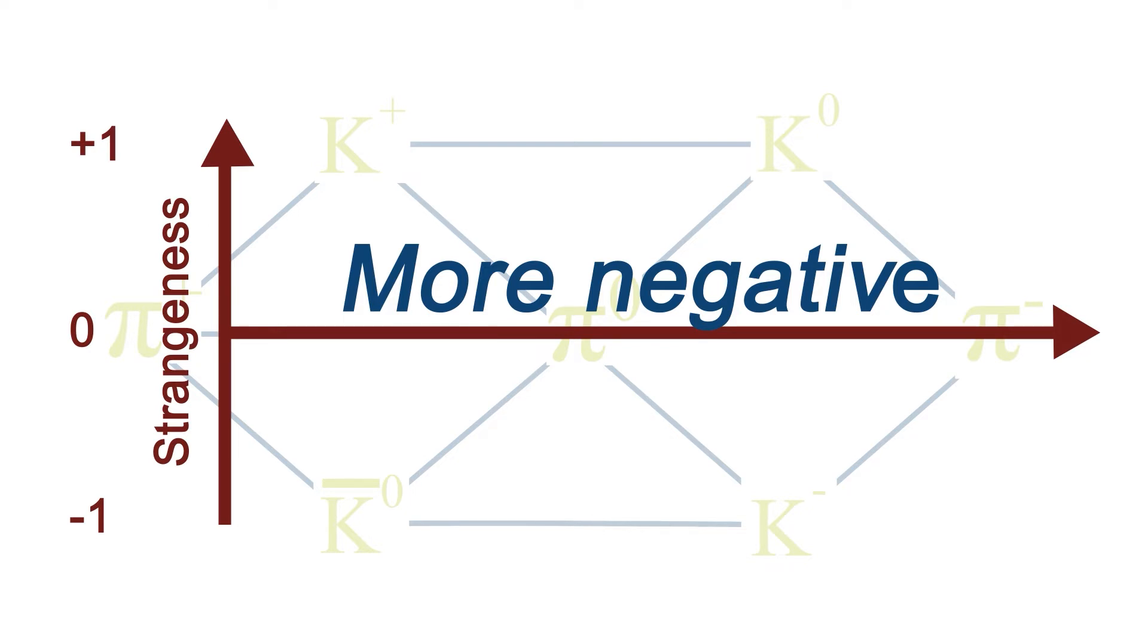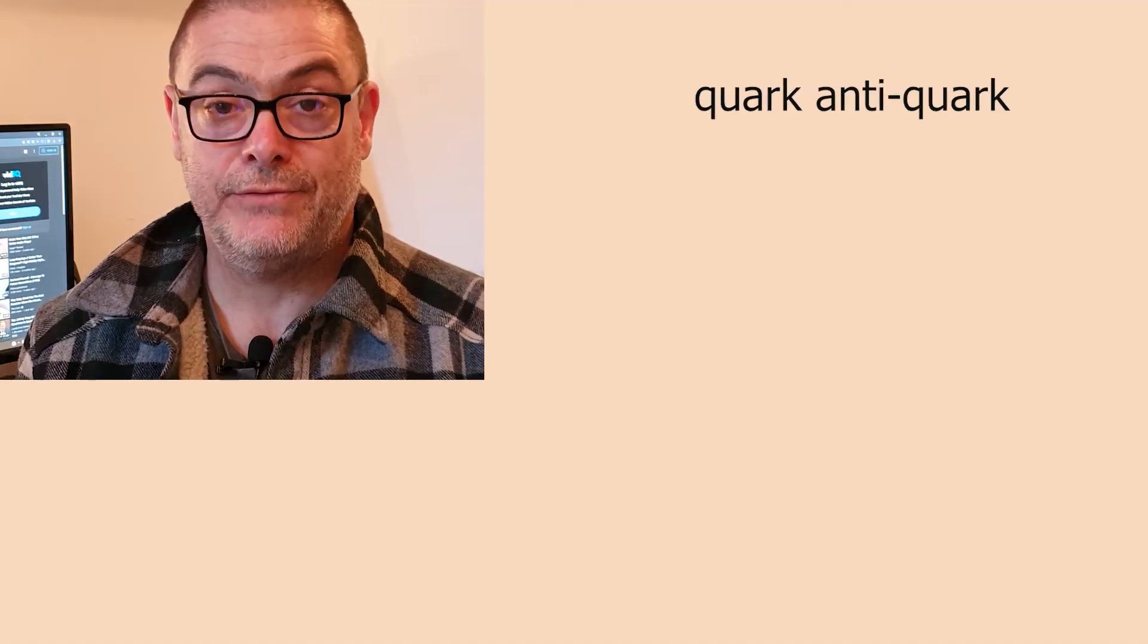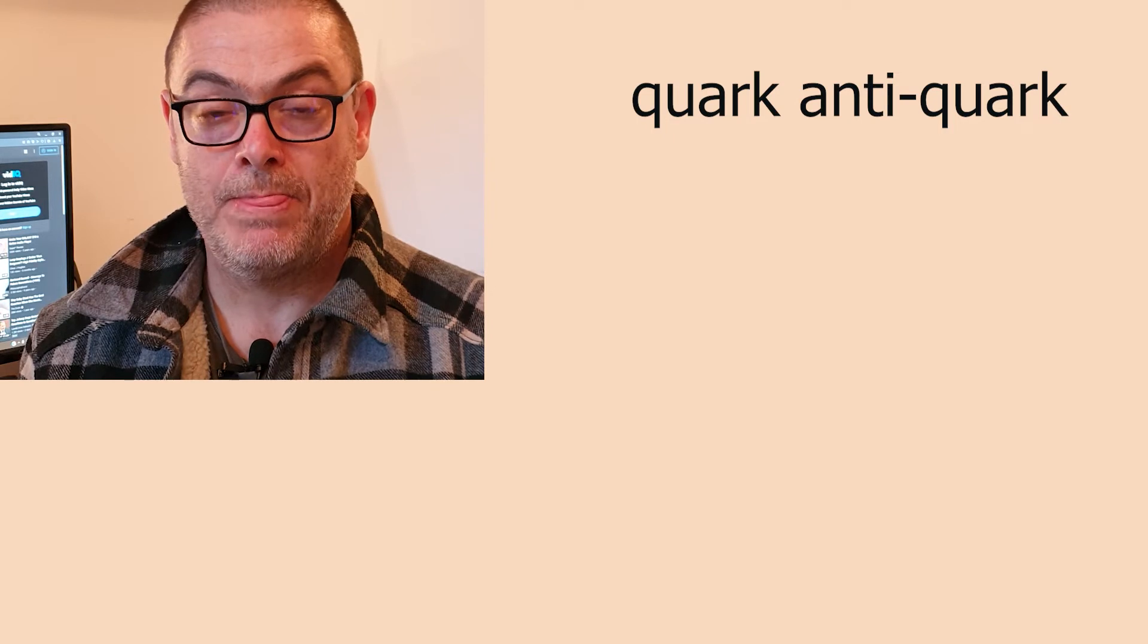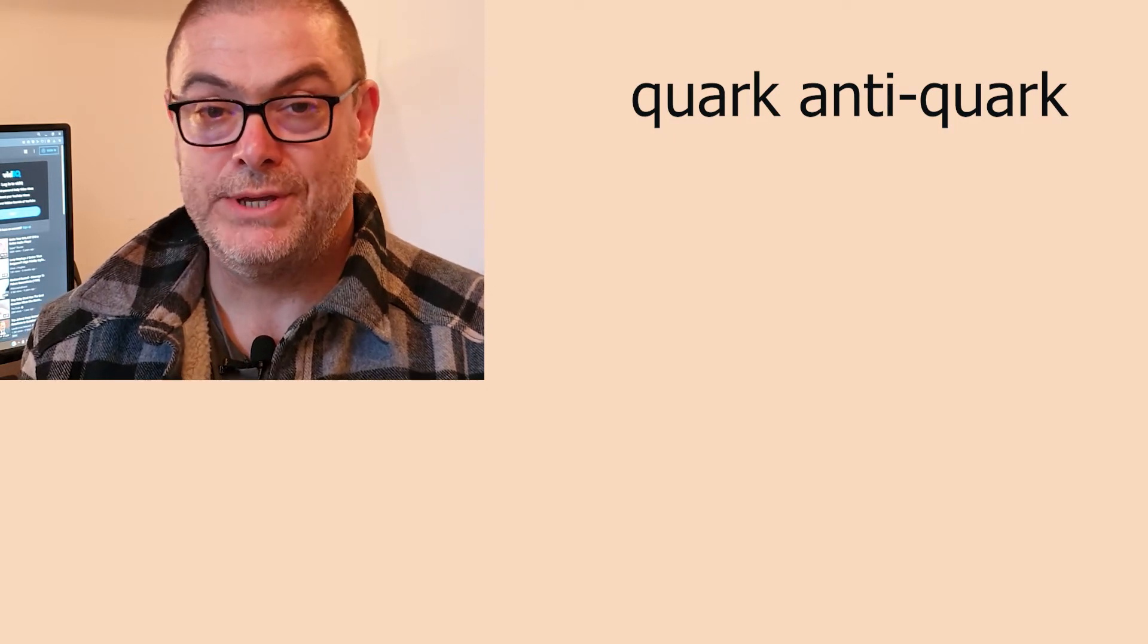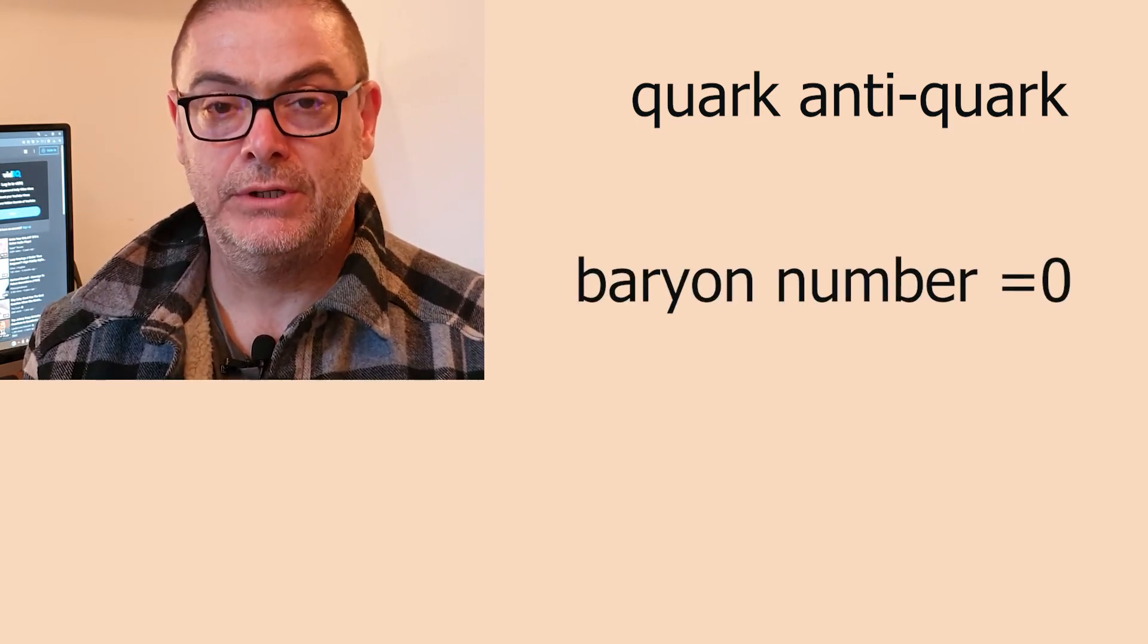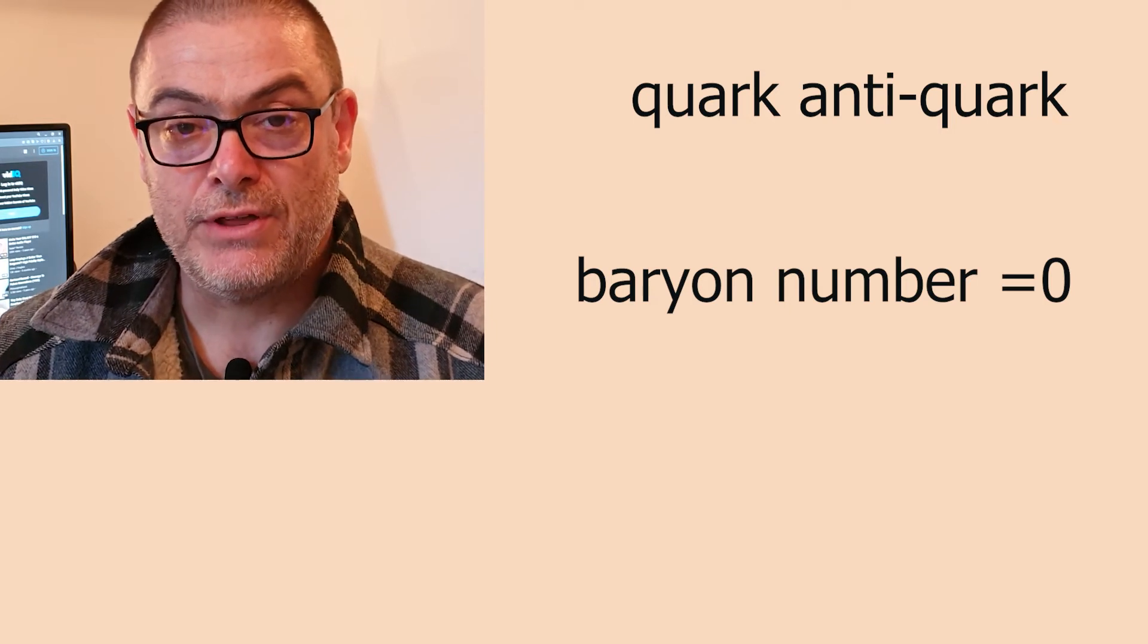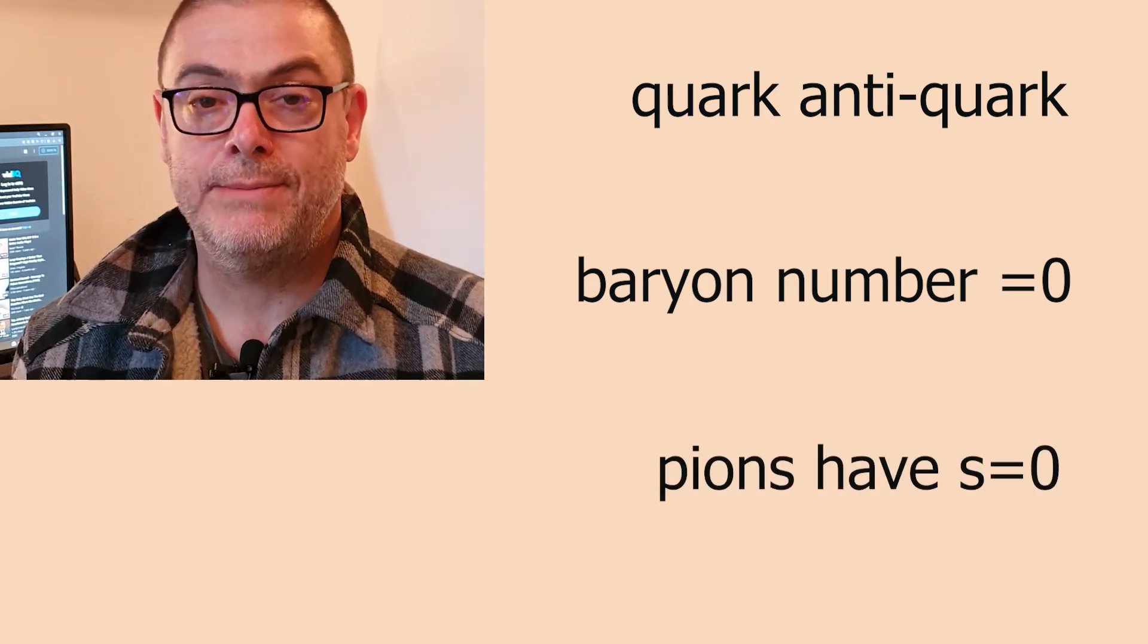There are three simple meson rules that we can apply. The first of these is that all mesons are made of a quark and an antiquark pair. The second is that all mesons have a baryon number of zero. And as far as we're concerned, for our third rule, we can say that all pi mesons have no strangeness.